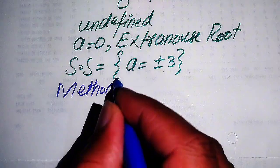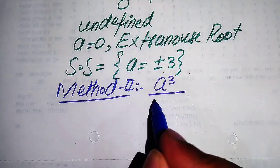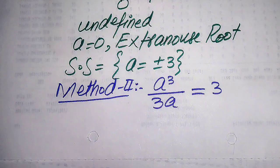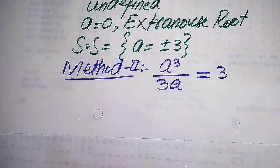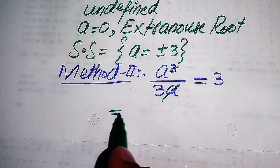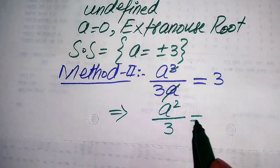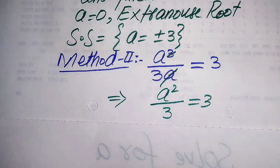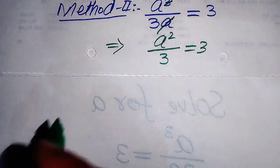In the second method, we copy down the given equation: a cubed divided by 3 times a equals 3. This second method is the quickest method — we quickly get the roots of the given equation. We can cancel a from the numerator a cubed with the a in the denominator, leaving a squared divided by 3 equals 3. Moving the 3 to the right hand side by multiplying gives a squared equals 9.